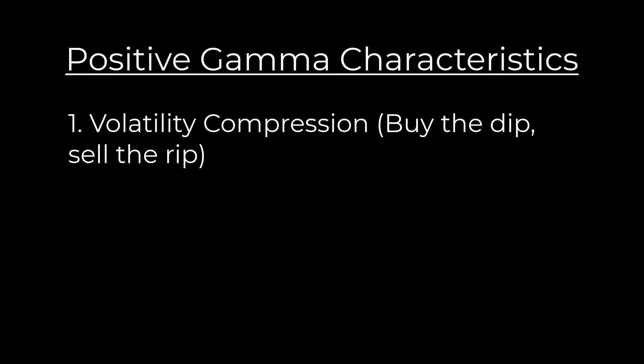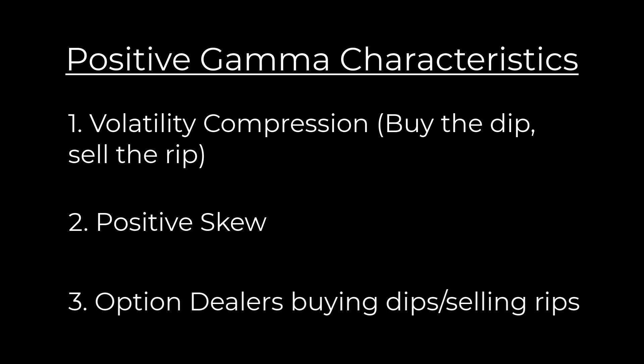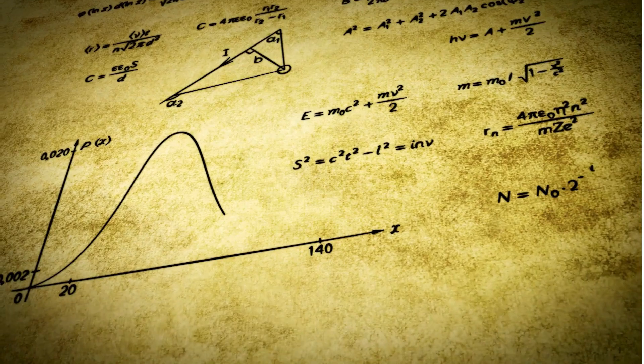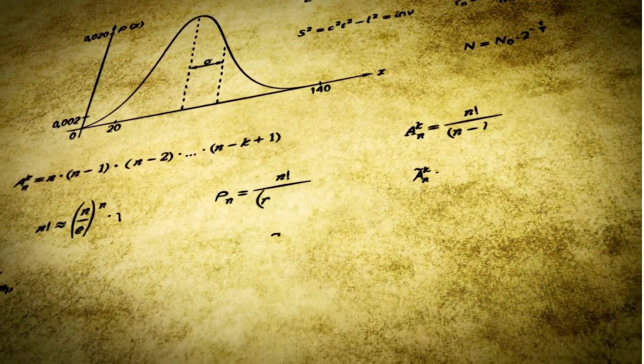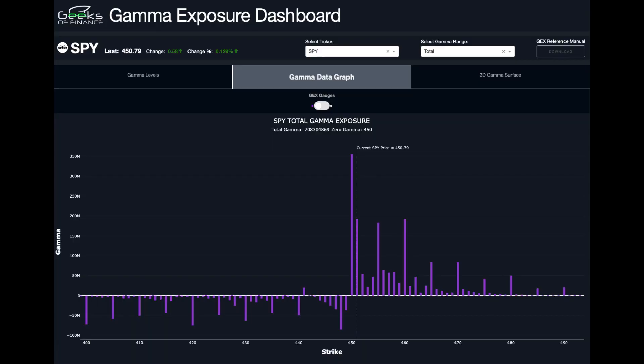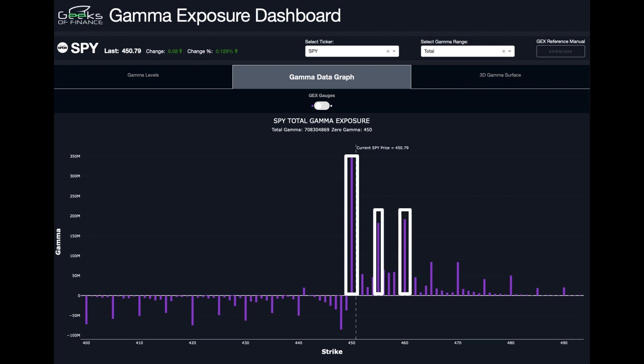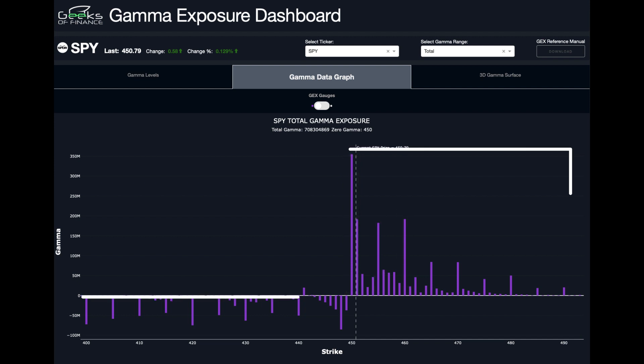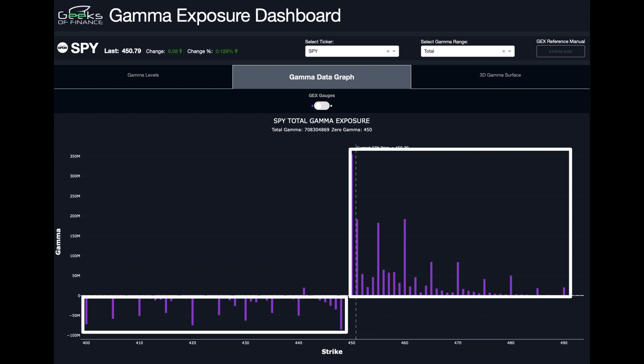The characteristics of positive Gamma are: volatility compression, buy the dip and sell the rip behavior, and a positive skew in the Gamma concentration data graph. Dealers are buying the underlying security when price goes lower, providing support underneath price, and selling as price goes higher, capping the upside. When we talk about positive skew, it's when there's a disbalance between open interest on the call side, creating that positive skew toward higher strikes.